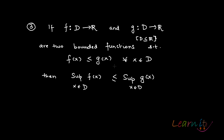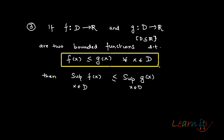In this property of supremum, we involve functions. The property says that if there is a function f from domain D, a subset of the real numbers, to range R, and also a function g with the same domain D to range R, and both are bounded functions such that f(x) is always less than or equal to g(x) for every element in the domain D.